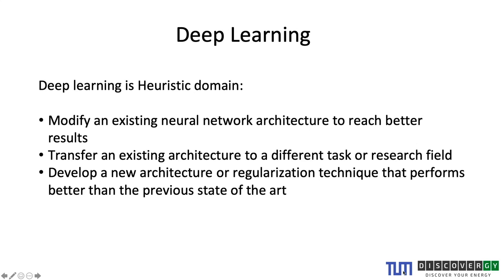There are three approaches usually taken in deep learning. First, we try to modify an existing neural network to reach better results by adding more layers or new regularization techniques. Second, we transfer an existing architecture into a completely new research field to perform a different task. Third, we develop new architectures or regularization techniques that outperform the previous state of the art.